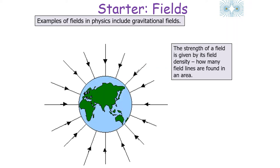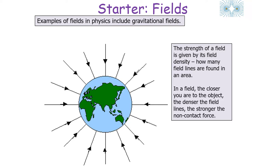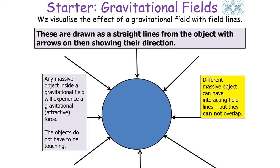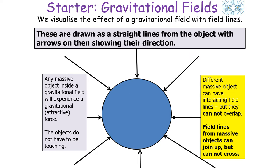In this image you can observe the gravitational field of the Earth. The strength of a field is given by its field density — how many field lines are found in a certain area. The closer you are to the object, the denser the field lines and therefore the stronger the non-contact force. Field lines are drawn as straight lines with arrows indicating direction. Any massive object inside a gravitational field will experience an attractive gravitational force without needing to be touching. Field lines from massive objects can join up with each other but cannot cross.